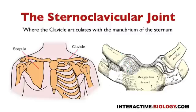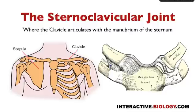The next one is called the costoclavicular ligament. That's a very short ligament that connects between the inferior aspect of the clavicle — the costal tubercle that we looked at before — going from that costal tuberosity on the inferior surface down to the costal cartilage of the first rib.